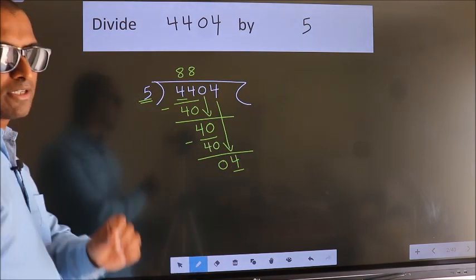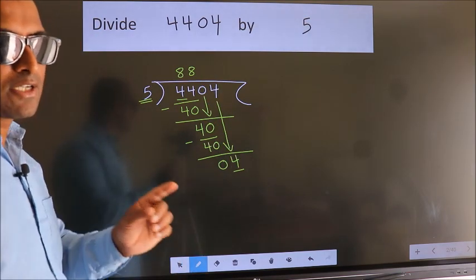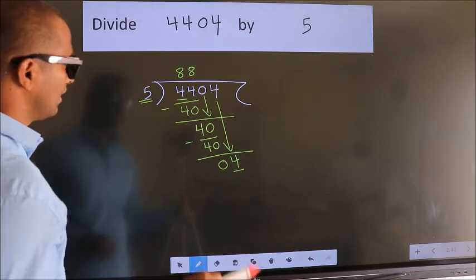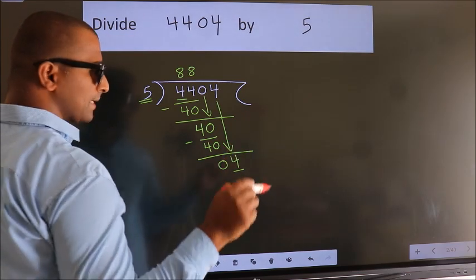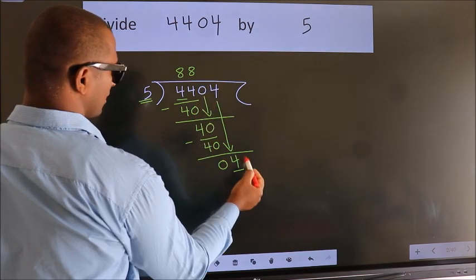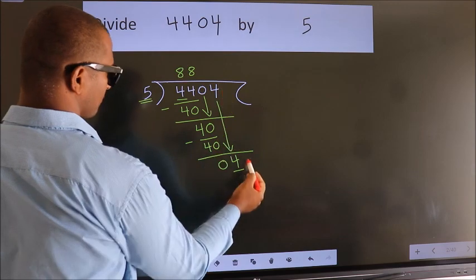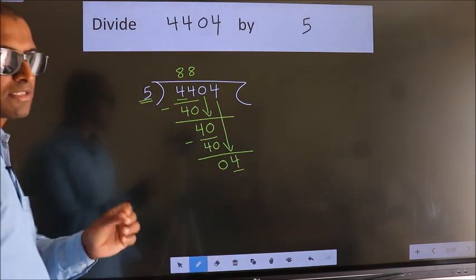Which is wrong. Why is it wrong? Because just now you brought this number down, and in the same step, you want to put dot, take 0. Which is wrong.